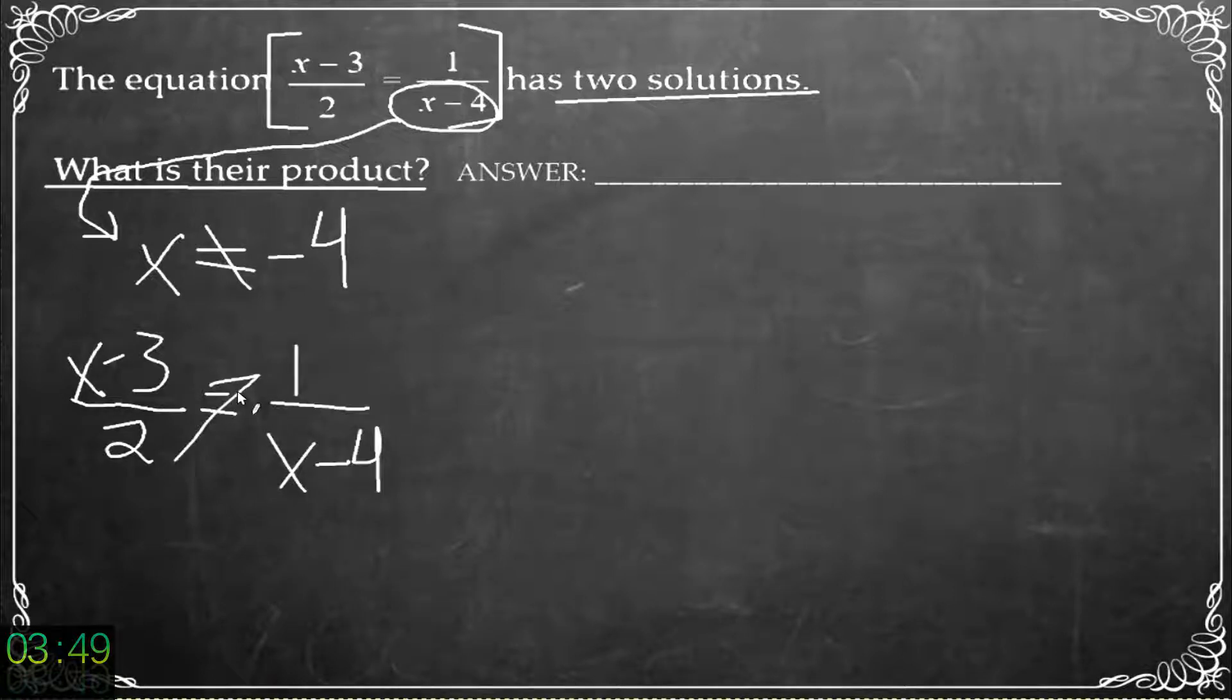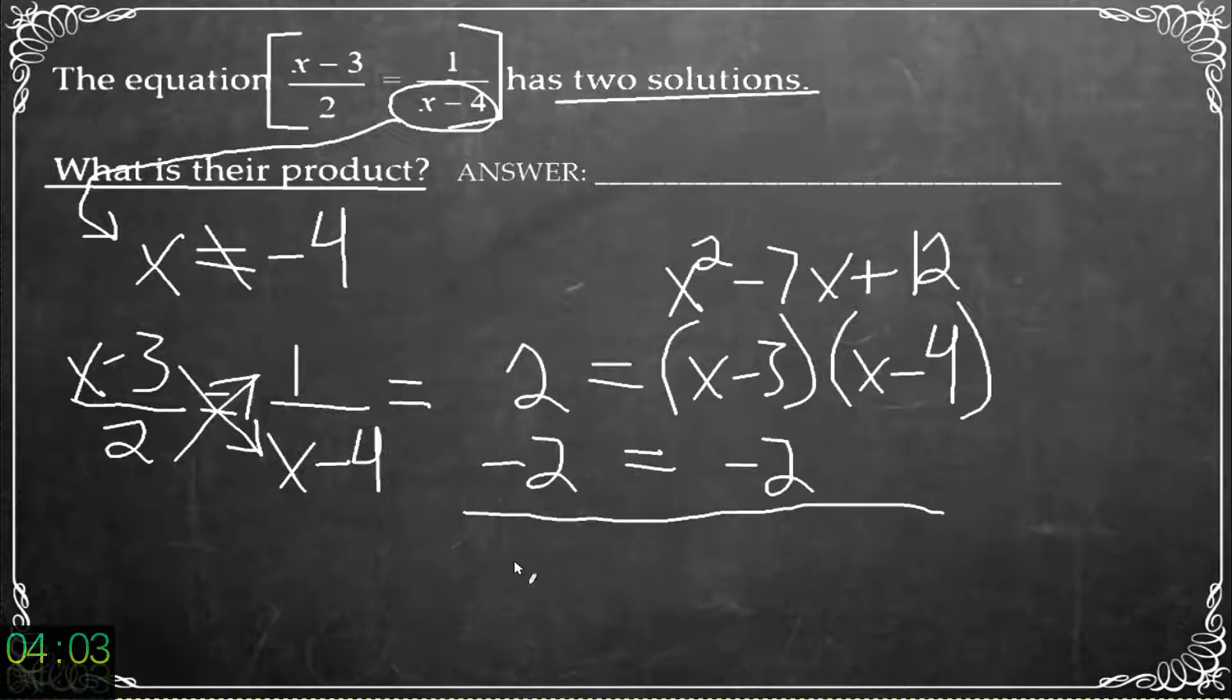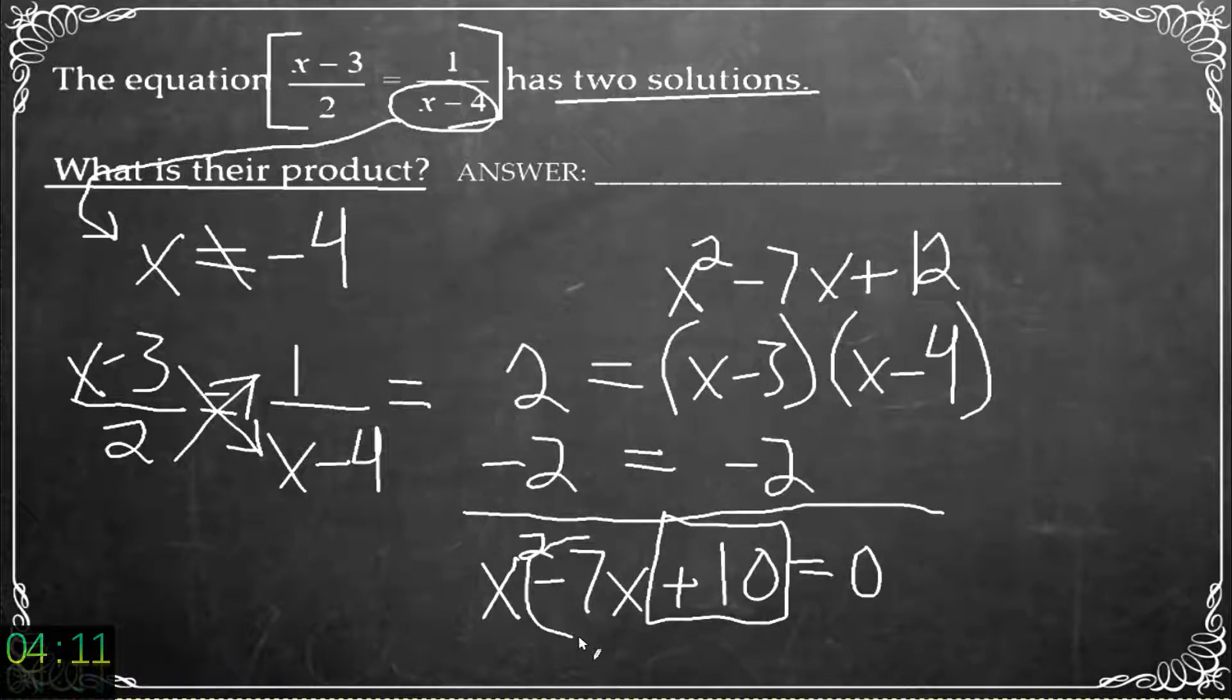But first let's cross multiply and find 2 equal now to x minus 3 times the quantity x minus 4. So x squared minus 7x plus 12. Subtract 2 from both sides and we're going to get x squared minus 7x plus 10 now. And to factor that out looks like that last term and the middle term are going to make me want to get a negative 5 and a negative 2.